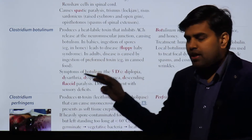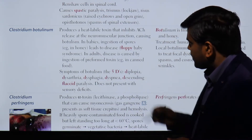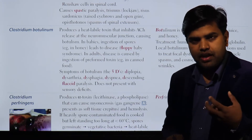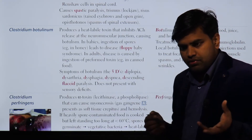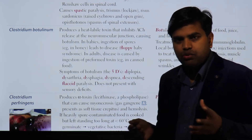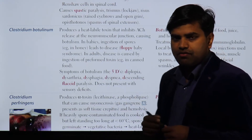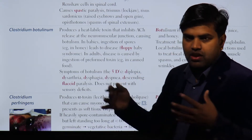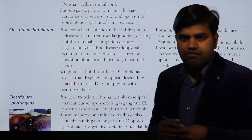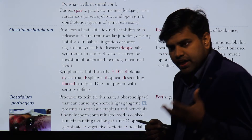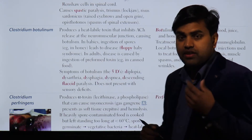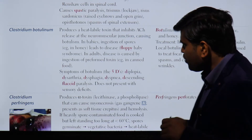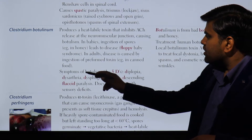In adults, the disease is caused by ingestion of preformed toxin, usually from canned food. The spores in canned food germinate into bacteria, release toxin, and the preformed toxin is already present inside the food. When consumed, it causes botulism symptoms.